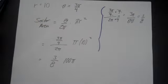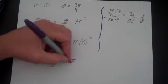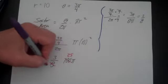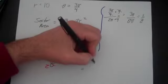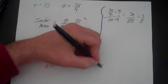So your sector area is 3 eighths of 100 pi. I'm going to try to simplify that if I can. Let's see, I think 4 does, that becomes 25 and that becomes a 2. My final answer is going to be 75 pi over 2.